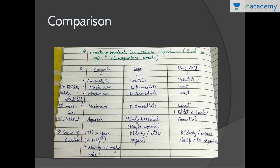Now, ureotelic organisms are those which need some conservation of water and do not have an abundance of water. The toxicity of urea is intermediate between uric acid and ammonia — it is less toxic than ammonia and more toxic than uric acid. Its solubility in water and water loss are also intermediate. The main organ of excretion is the kidney, not the gill surface.